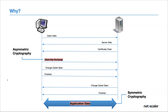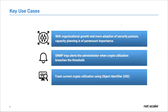The whole intent is to track these things so we can mitigate unforeseen events or take corrective actions. The three key use cases we're addressing are: capacity planning for organizations with exponential growth, providing SNMP alerts to track crypto utilization before it breaches the threshold so you can take corrective actions, and providing OIDs to see the current value of both symmetric and asymmetric crypto utilization. To enable this feature on the GUI, go to System > SNMP > Alarms, where you will see two new alarms: asymmetric crypto utilization and symmetric crypto utilization.